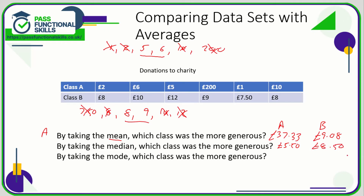So if we're going off the median, then Class B is more generous. Looking at the mode: in Class A there is no mode because no value repeats itself — you'd never really be asked this in a real test. For Class B, the mode is eight pounds because that appears twice.